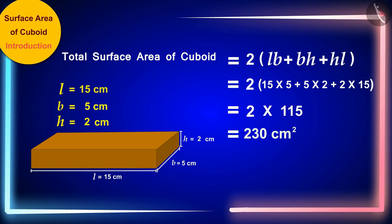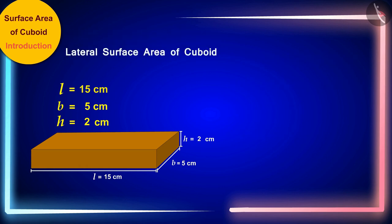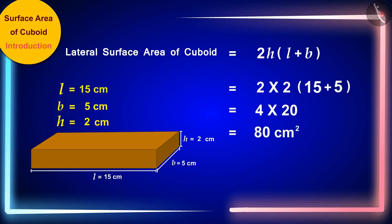Now in the same way, we will also write the length of the cuboid 15 centimeters, width 5 centimeters, and height 2 centimeters respectively in place of l, b, and h in the formula of lateral surface area of the cuboid. The lateral surface area of the cuboid is 80 square centimeters. Well done friends, your answer is absolutely correct.